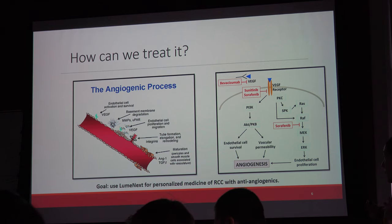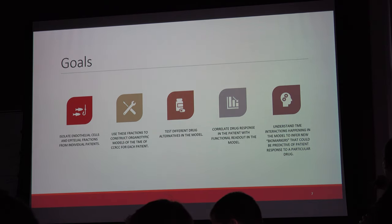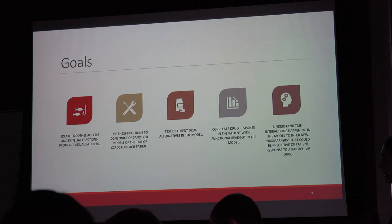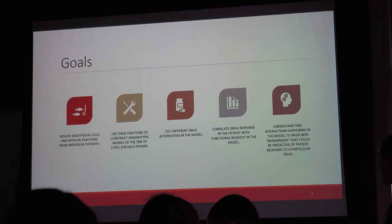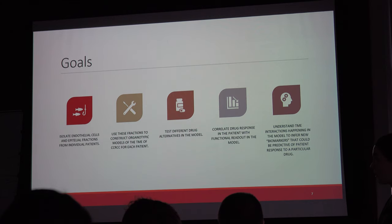Our goal is to use these treatments in a Luminex model to try to personalize medicine. For this project we have five different goals: first, to isolate both the endothelial and epithelial components from individual patients; second, use these fractions to construct organotypic models; third, test different drugs with them. From the drug testing output, we'll correlate drug response with patient outcome, and use that information to identify biomarkers that predict whether a patient will respond to a particular treatment.